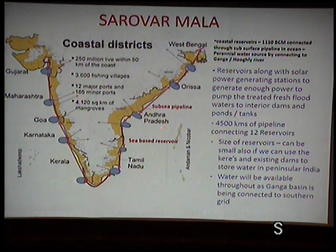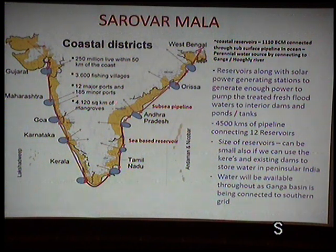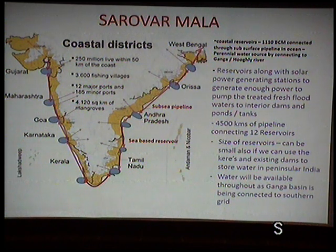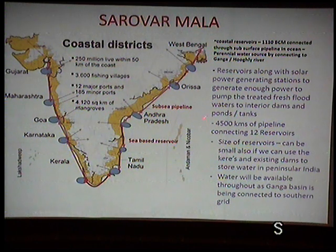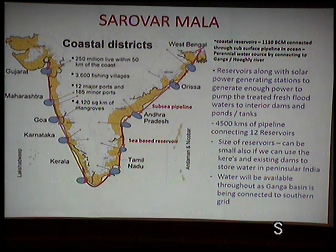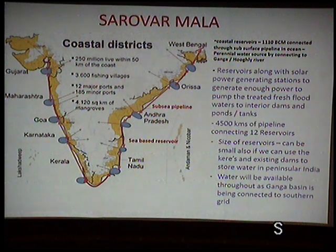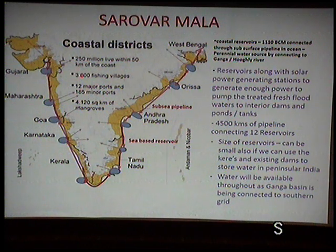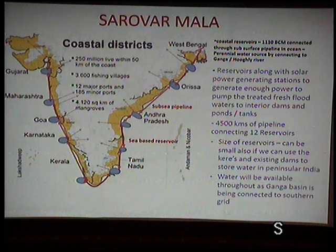With the concept of 'Sarovarmala' — inspired by the Sagarmala concept — small coastal reservoirs connected like a necklace along the Indian subcontinent can be linked by pipelines following mean sea level contours without pumping. This means 24-hour water supply is possible. When one region like Maharashtra lacks water, supply can come from another — the Ganga-Brahmaputra dumps a large amount of water into the ocean, and the Krishna-Godavari basin can also contribute.